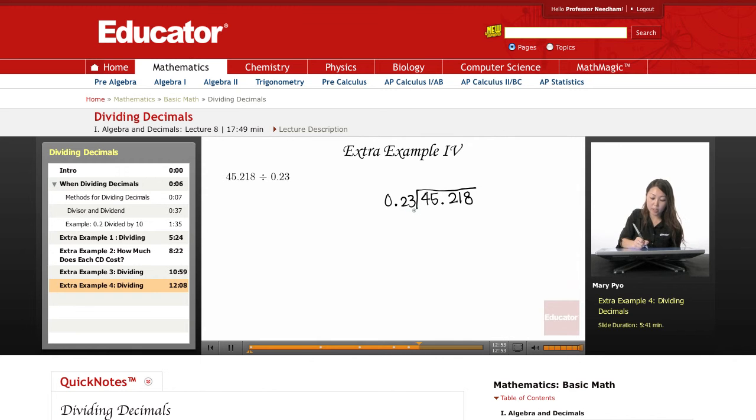I have two numbers here, so what I'm going to do is take that number, 23, multiply it by, or sorry, 0.23, and multiply it by a multiple of 10 with this many zeros. So there's two numbers. Multiply it by 100, two zeros. This becomes 23. And if I multiply my divisor by that number, I have to multiply my dividend by that number also.